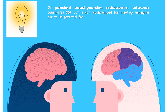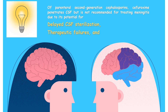Regarding CNS use of second generation cephalosporins: of all the parenteral second generation agents, cefuroxime does penetrate CSF, but it is not recommended for treating meningitis due to its potential for delayed CSF sterilization, therapeutic failures, and more frequent hearing loss when compared with ceftriaxone.